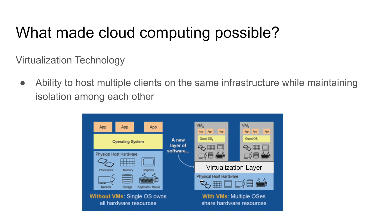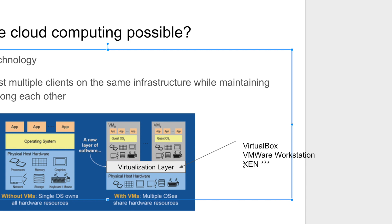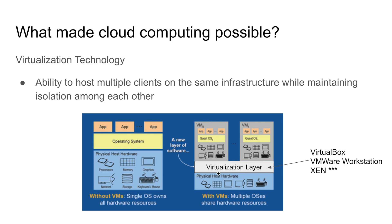Look at the right side. You have your physical hardware and on top of that, you have a virtualization layer. It could be a hypervisor or a different layer of virtualization. The virtualization layer is nothing but a new software. There are different softwares that provide this virtualization — for example, VirtualBox, which is open source, or VMware Workstation, or Xen, which is the virtualization software that AWS uses.